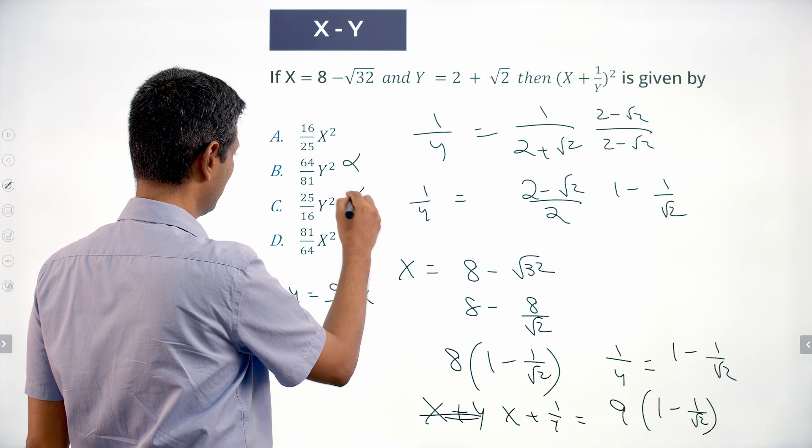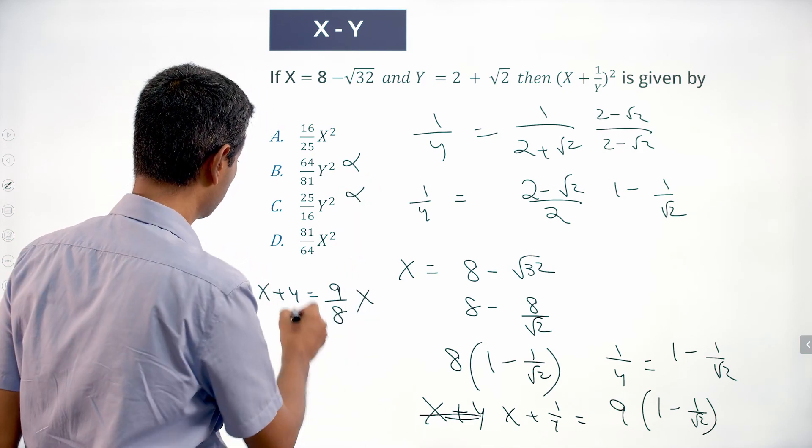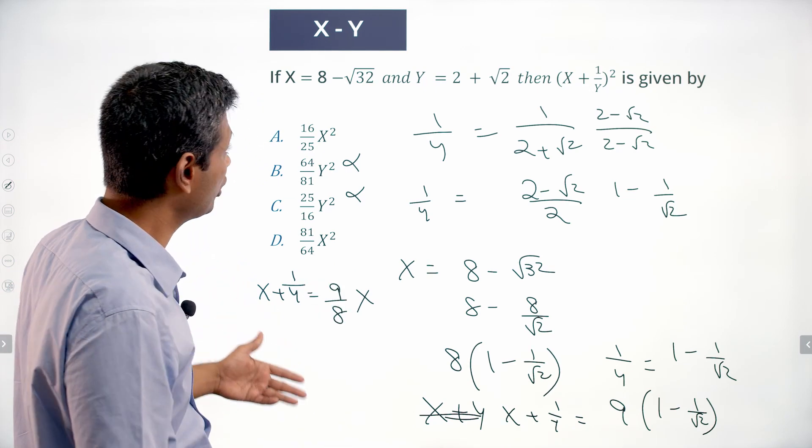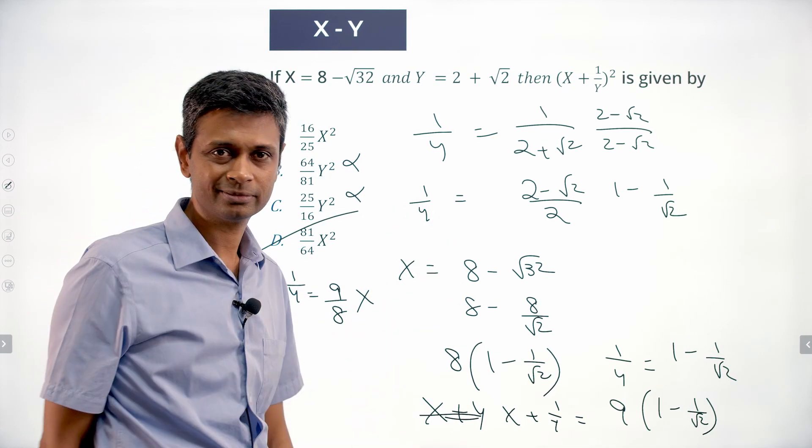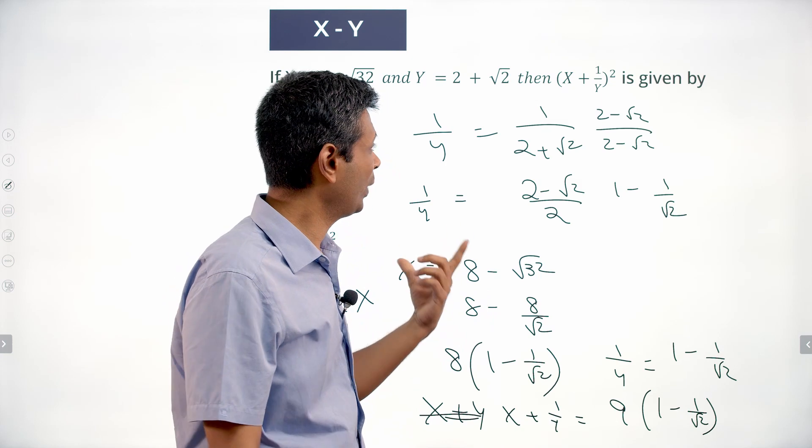x plus 1 by y is 9 by 8 times x. x plus 1 by y the whole square is 81 by 64 times x squared. Once you simplify 1 by y, 1 by y into 8 is x.